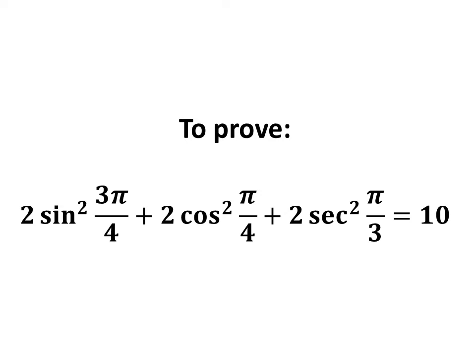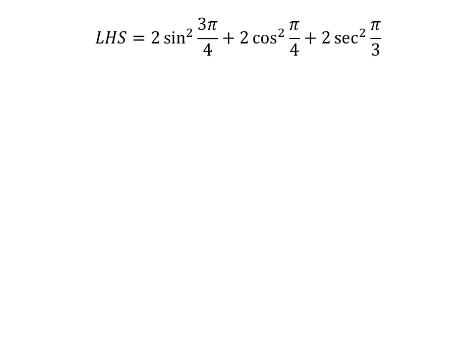In this video, we will learn to prove the equation 2 times square of sine of 3 times pi upon 4 plus 2 times square of cosine of pi upon 4 plus 2 times square of secant of pi upon 3 is equal to 10.